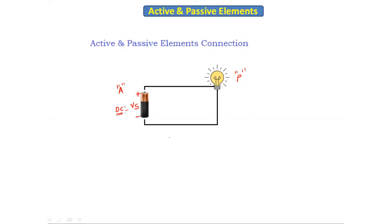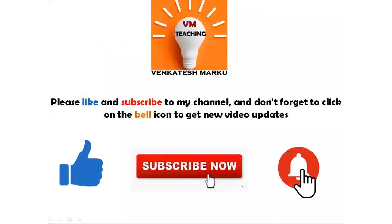This is a real-time diagram of active and passive elements. Simply put: the active element supplies energy, and the passive element takes the energy. In this case, the battery supplies the voltage and the bulb takes the voltage. This is one real-time example of active and passive elements. In the next class we will discuss more about DC circuits. Thank you everyone.